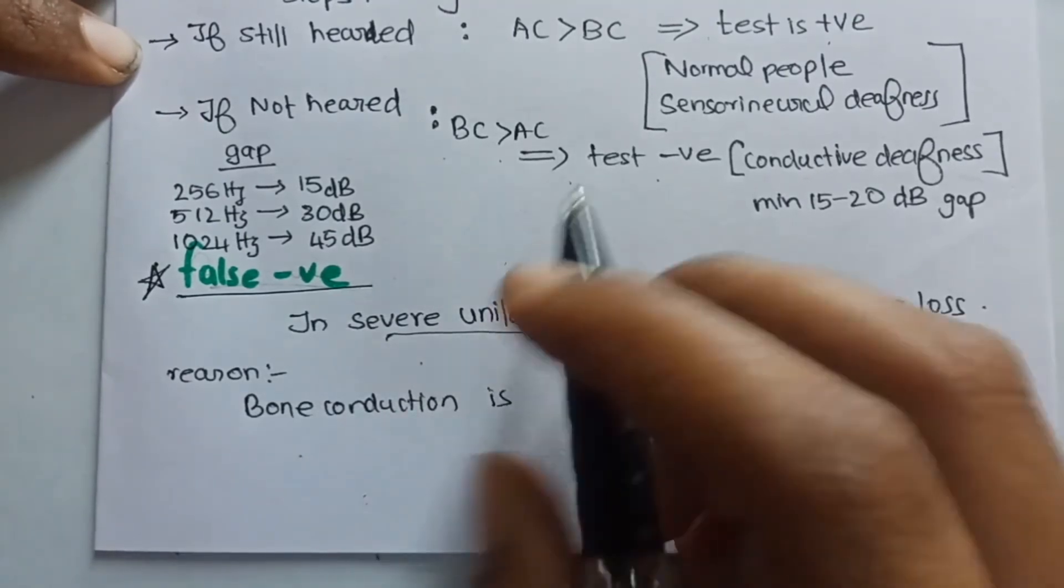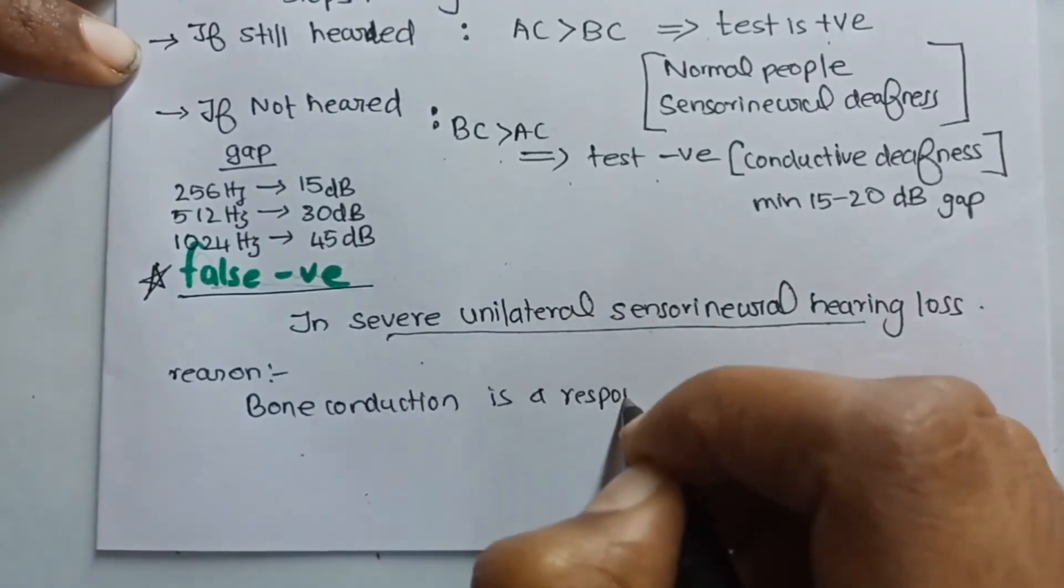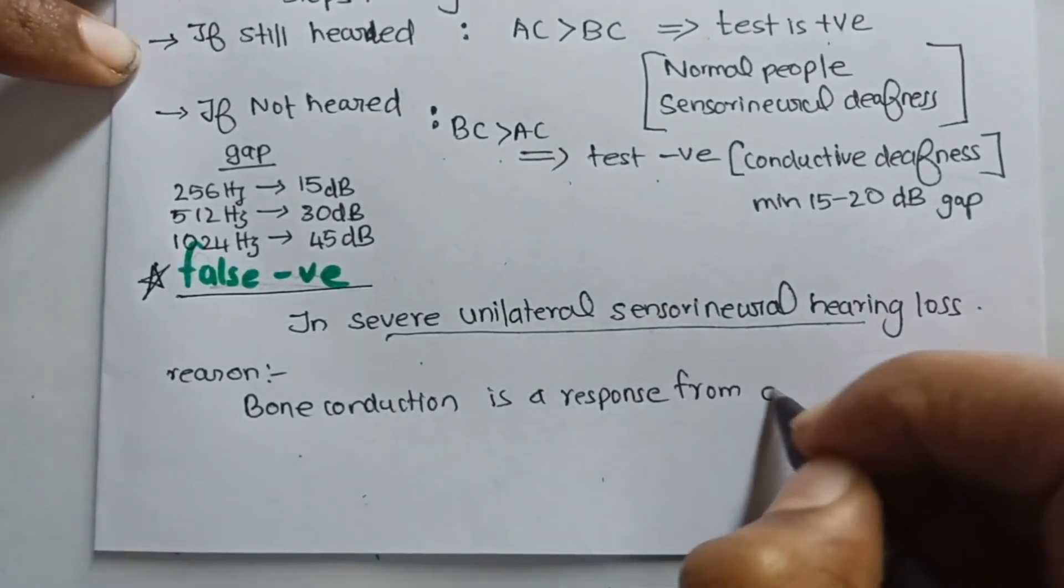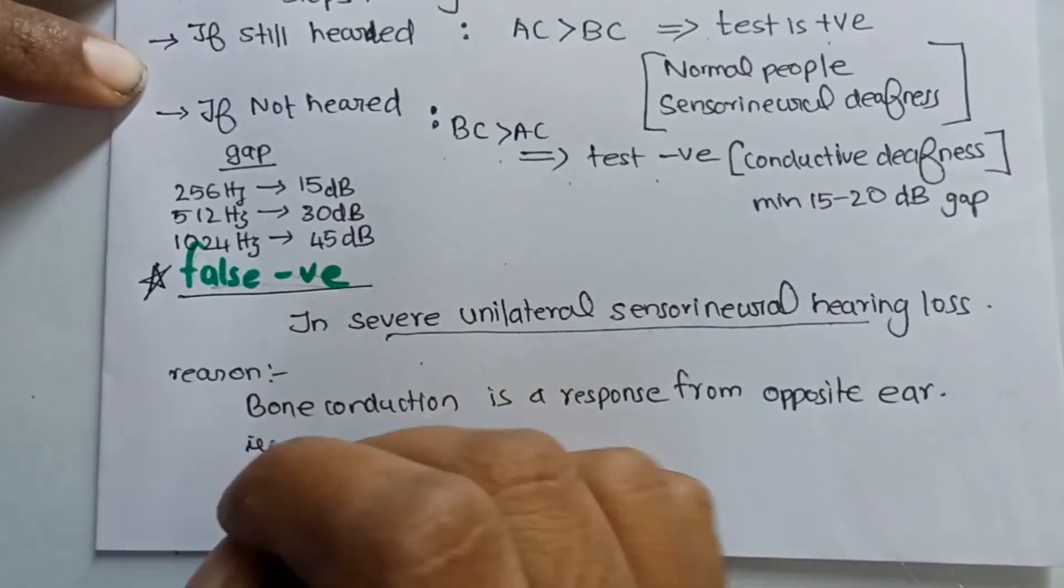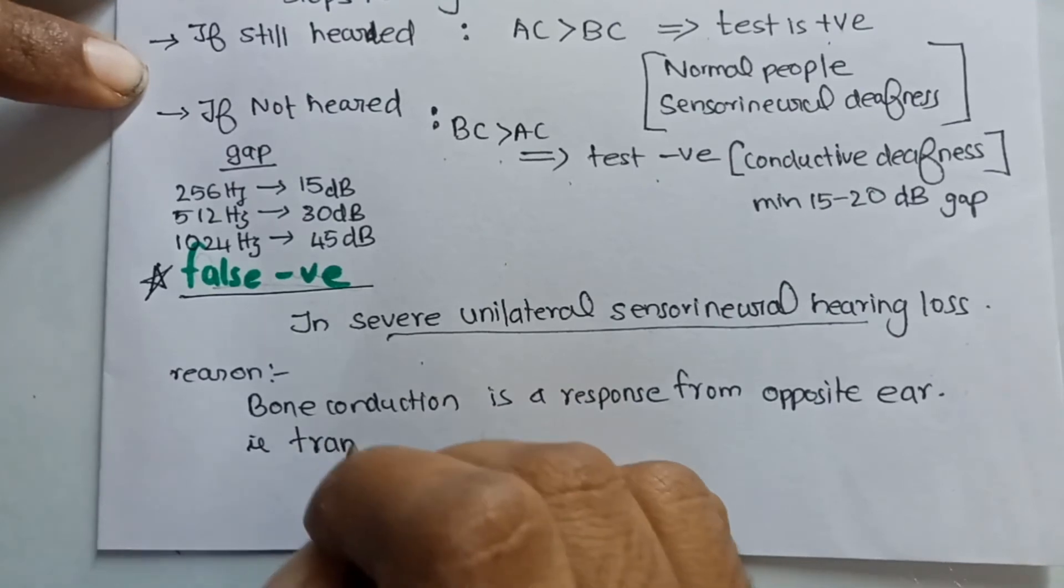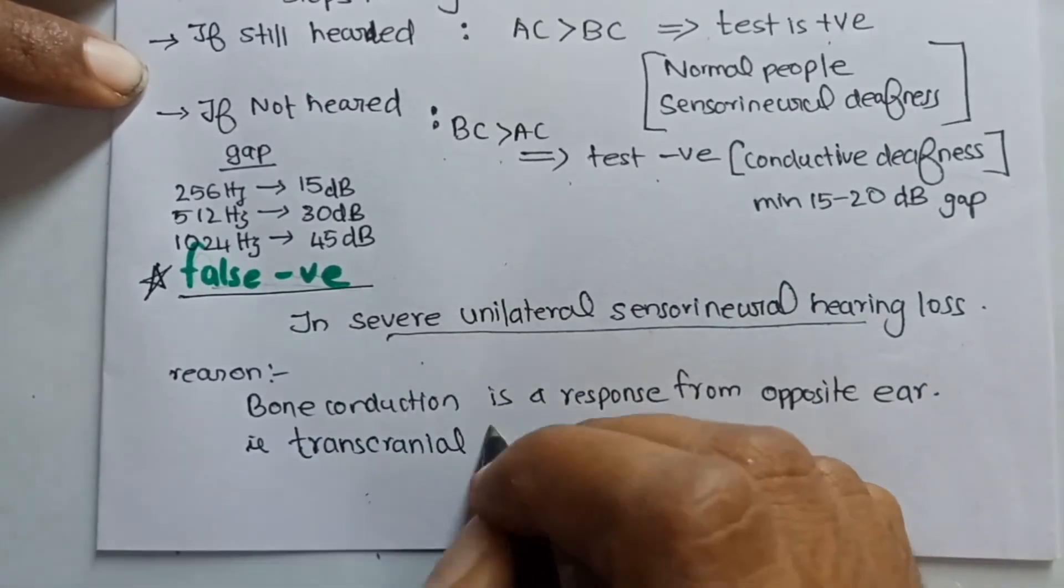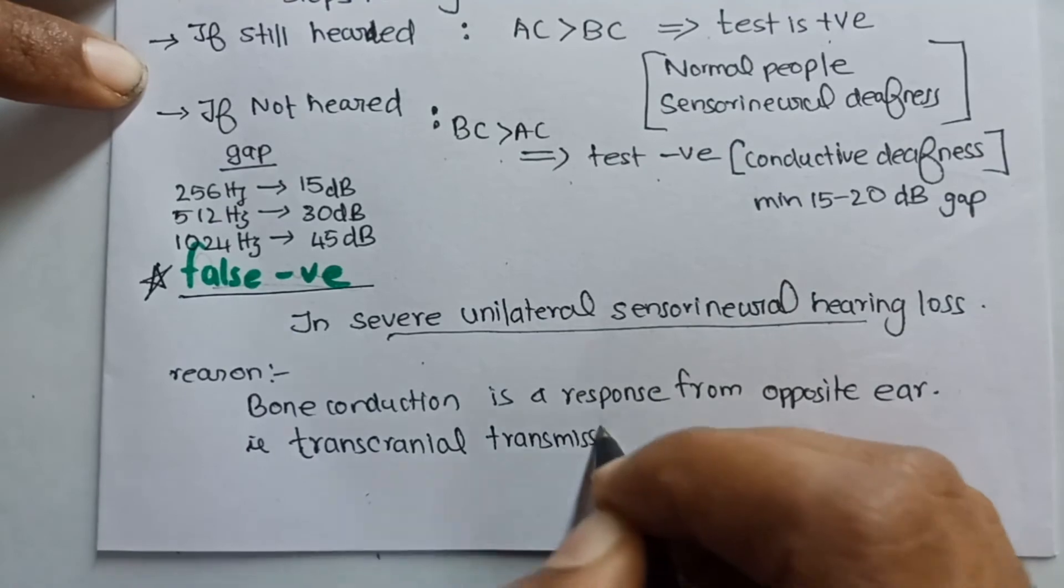This is because the bone conduction, the increased bone conduction, is actually a response from the opposite ear, not the respective ear. And this is occurring through transcranial transmission of sound.